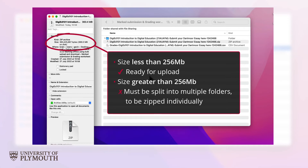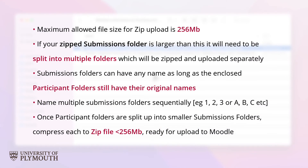If the size of the zipped submissions file exceeds the 256MB limit, you will need to split it into multiple files. To enable this, you will need to create multiple smaller submissions folders, each containing some of the submissions.